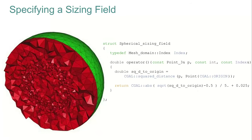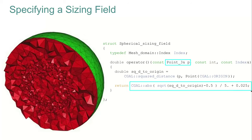What if we want to specify a specific sizing field for the tetrahedra? We can define a class that, for every point P to be inserted in the mesh, returns a value depending on its position in the sphere. This value tells the mesher the size of the tetrahedra, which is why in the following example you see different sizes of tetrahedra depending on the distance to the center of the sphere.